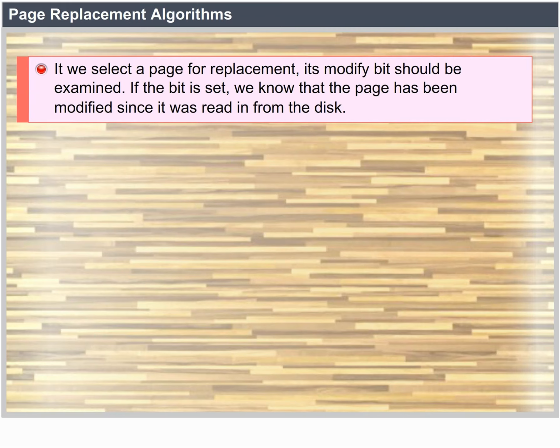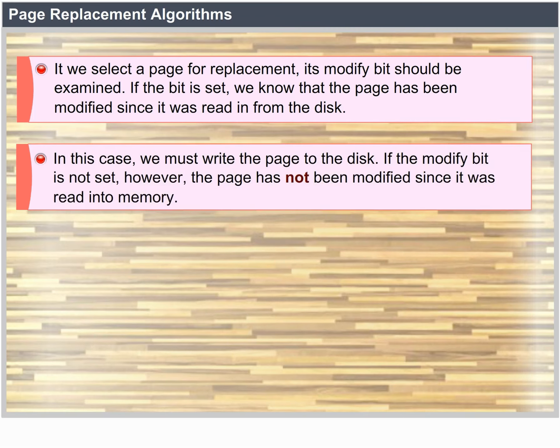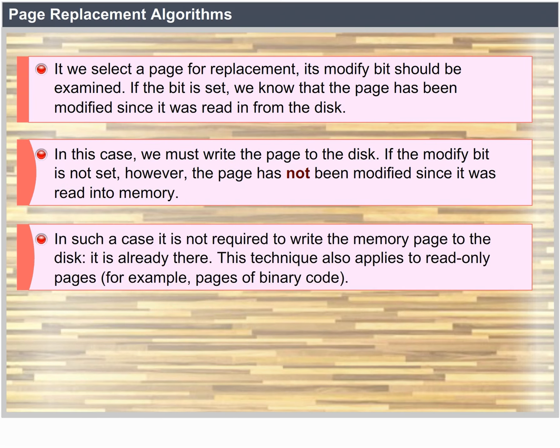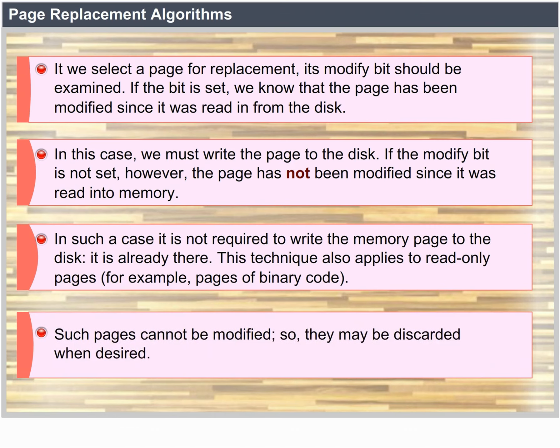When we select a page for replacement, we examine its modify bit. If the bit is set, we know the page has been modified since it was read in from disk, so we must write it to disk. If the modify bit is not set, the page has not been modified since it was read into memory, so we need not write it to disk — it is already there. This technique also applies to read-only pages, such as pages of binary code. Such pages cannot be modified and may be discarded when desired.